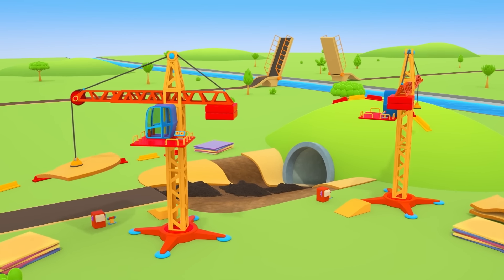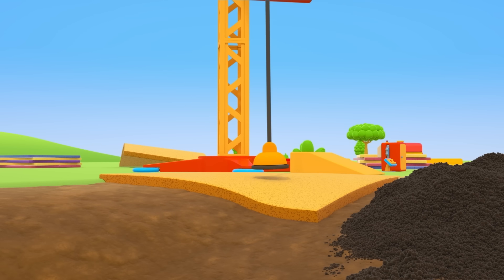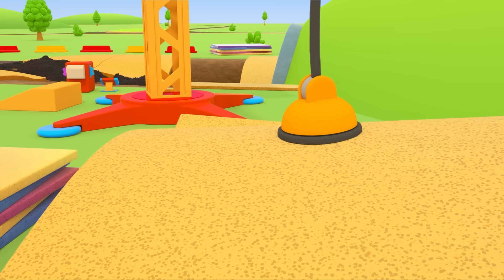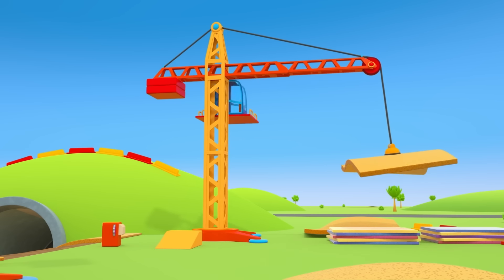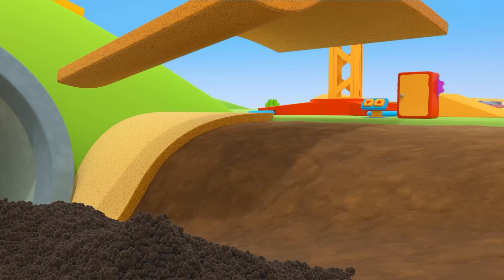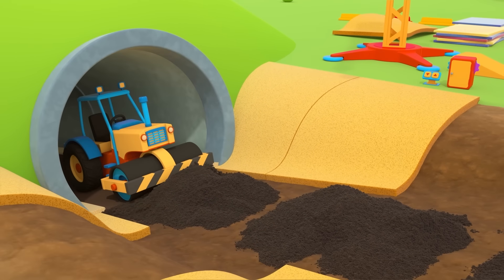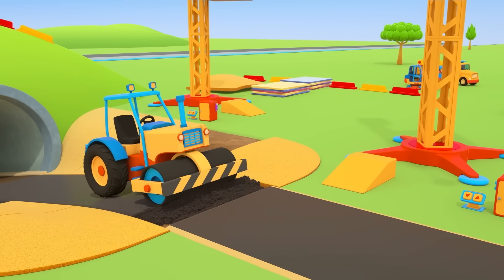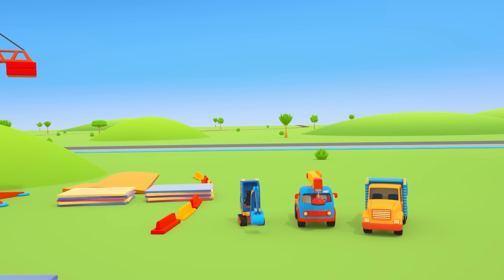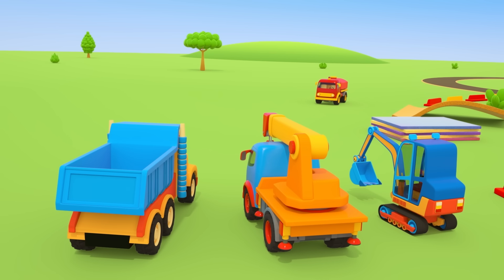Here's a construction site. Tower cranes are placing large concrete slabs to reinforce the exit from a tunnel. Without these concrete reinforcements, soil could spill onto the road. A road roller compacts the asphalt to make the road smooth and strong. Uh-oh, these vehicles can't work. They've run out of fuel.